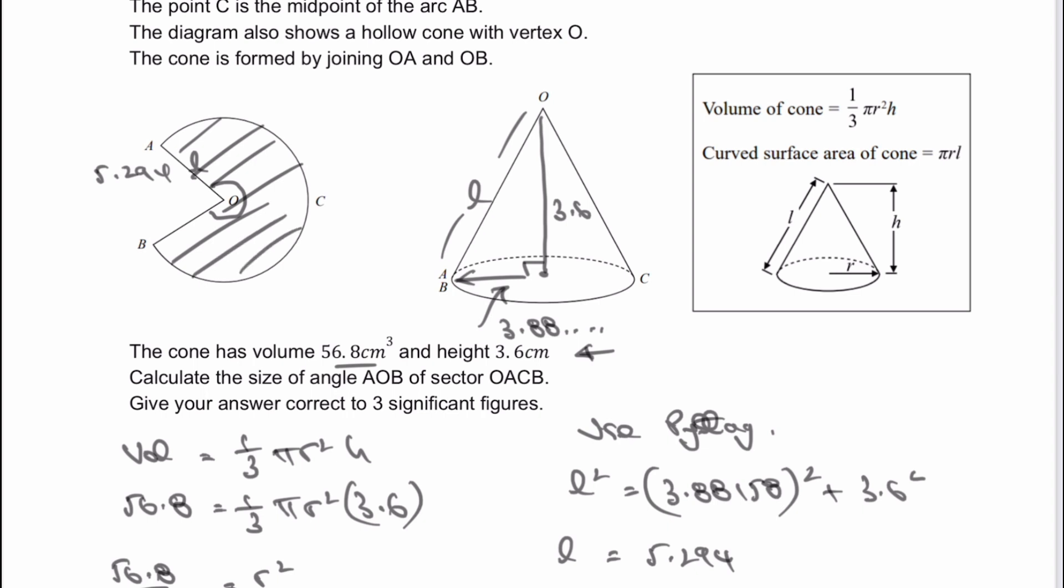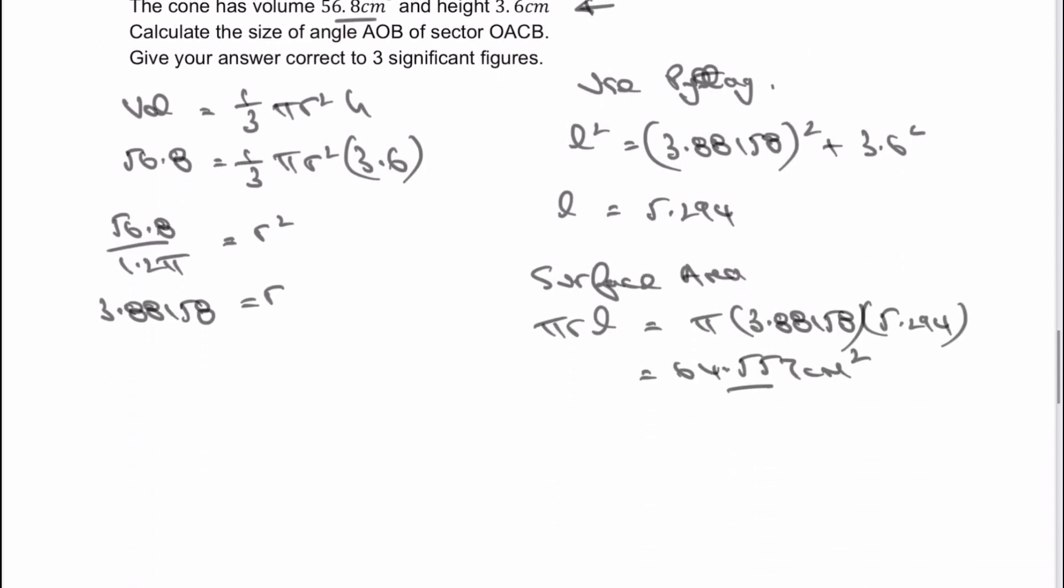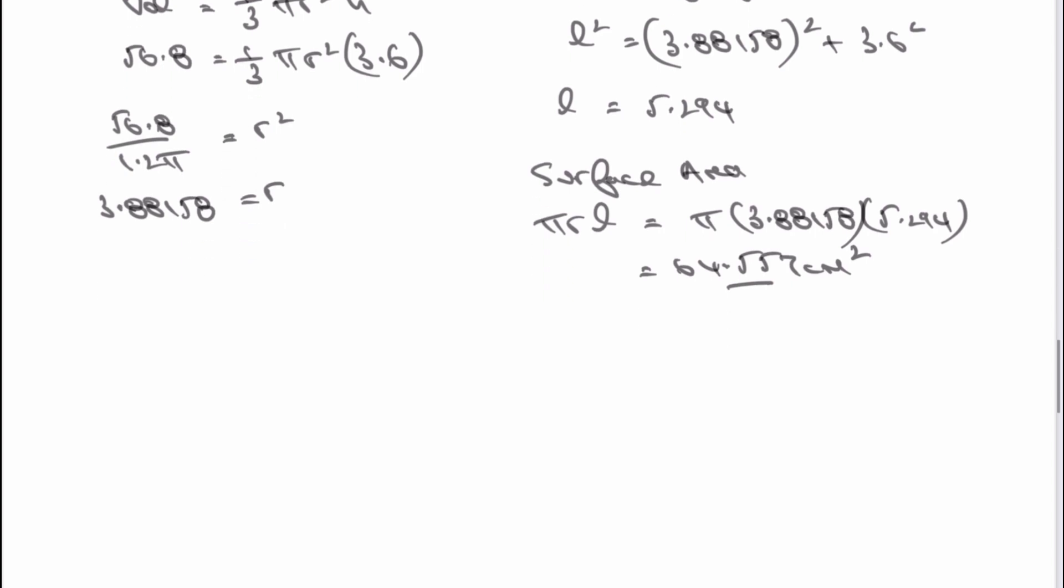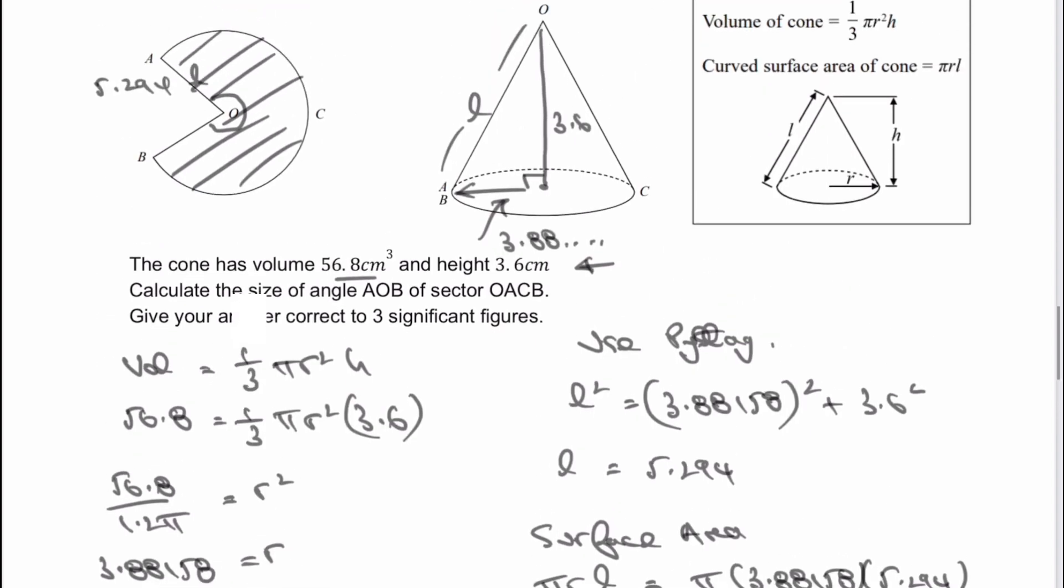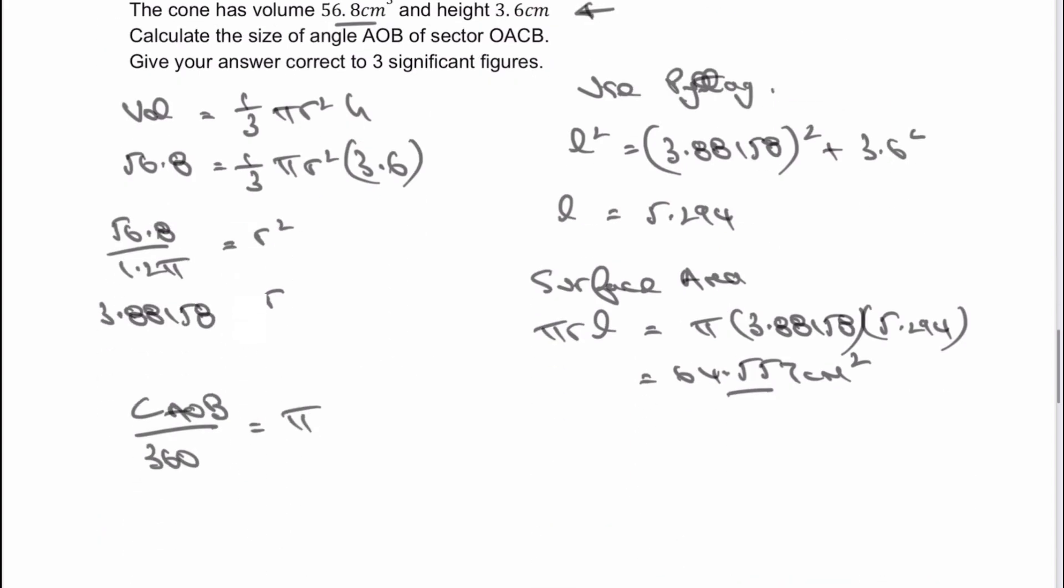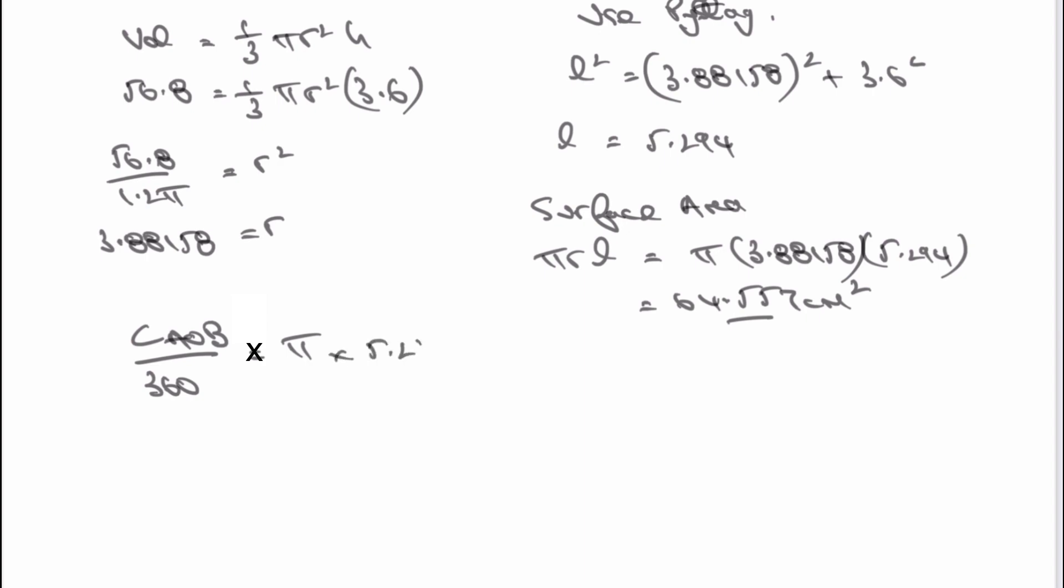Well that's good news for us, because then we can use that information to work out the value of the angle that we're looking for, which is going to be angle AOB. So what we're saying then, is that angle AOB out of 360 degrees is going to be equal to pi times R squared. Now R is actually the value of L, which is the radius of 5.294 on this particular sector. So it's going to be pi multiplied by 5.294 squared.